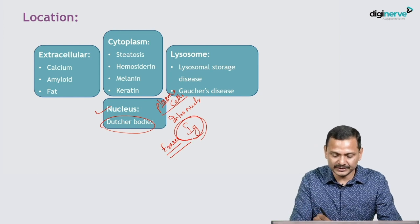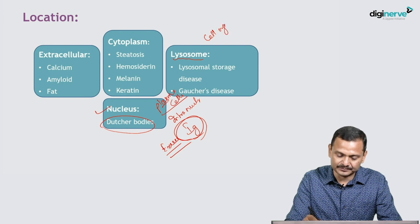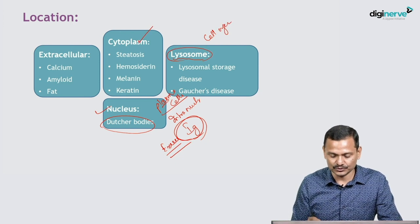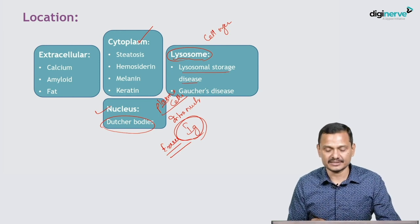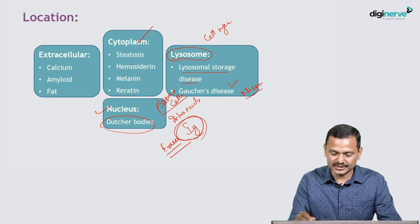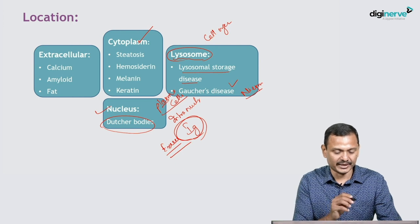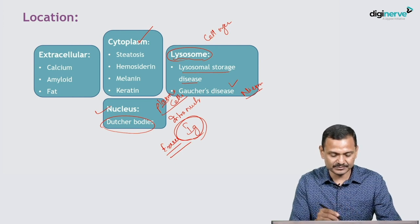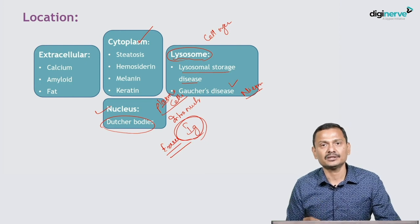The fourth compartment is the lysosome or within a cell organelle. Like in lysosomal storage diseases — for example, Gaucher's disease and Niemann-Pick disease. So the four common sites of deposition are: extracellular, cytoplasm, nucleus, and lysosome.